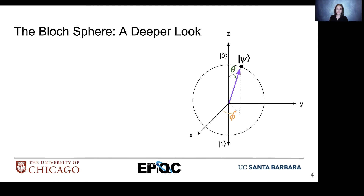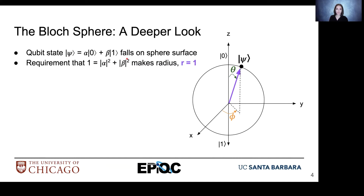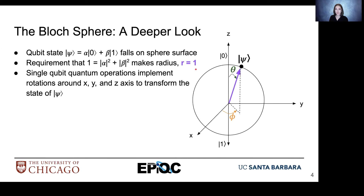Let's take a little bit of a deeper look at the Bloch sphere. We have qubit state falling on the surface of the sphere, and since we have the requirement that we have a 100% chance of falling in either ket0 or ket1 upon measurement, our radius for the Bloch sphere is equal to 1 — it's a unit sphere. Single qubit operations rotate the qubit state around the surface of the sphere, and these rotations are either in the x, y, or z direction if they're around the x, y, or z axis respectively.